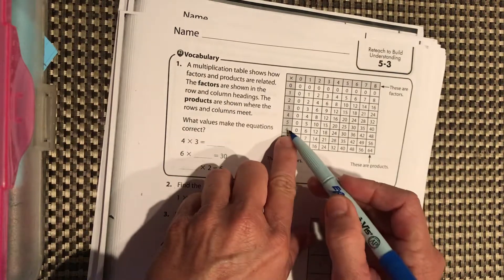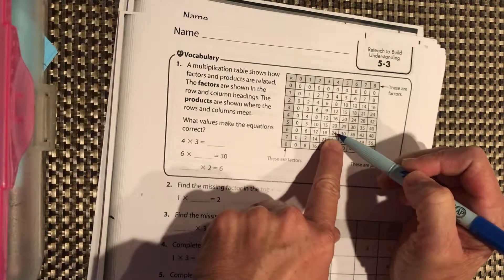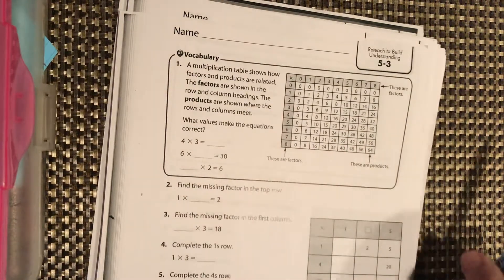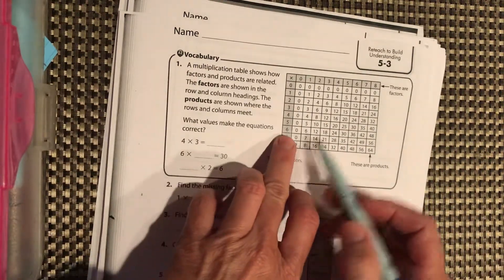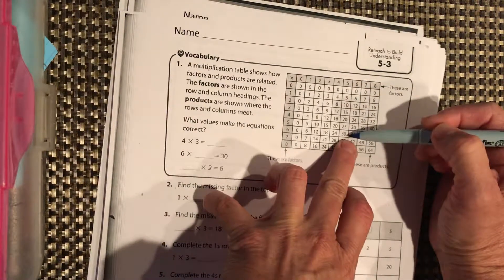So if I go to 6 times 4 and I go down and across, 6 times 4 is 24. It makes it easier as long as we can find our two factors up here, we can go and find what their products are.